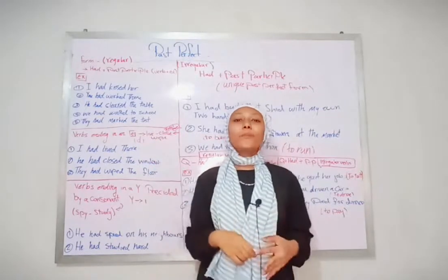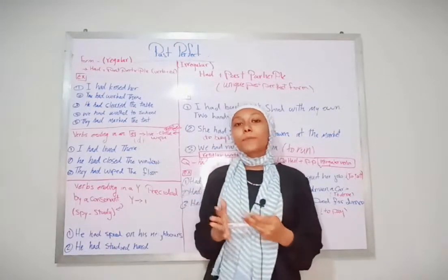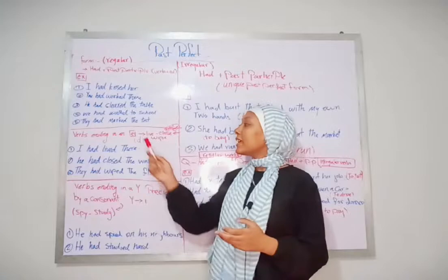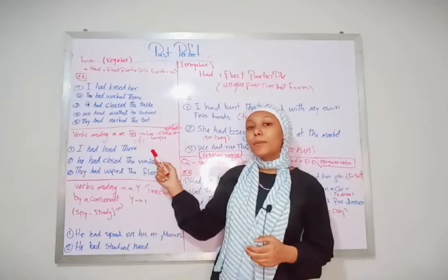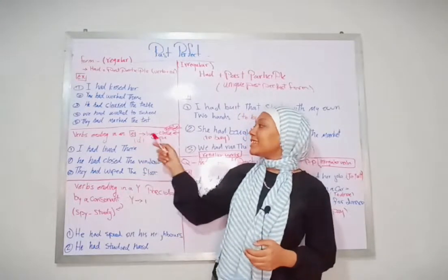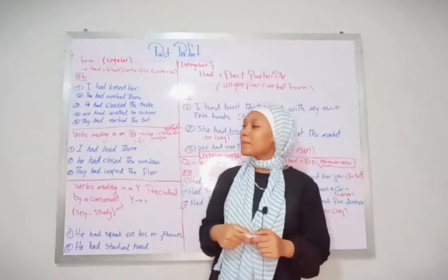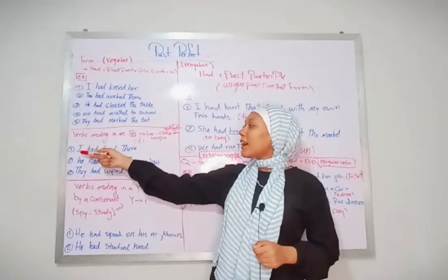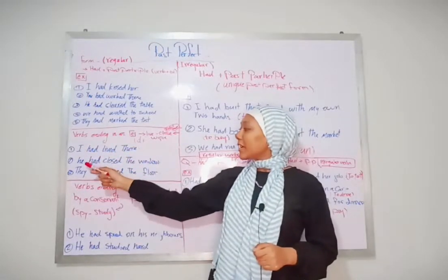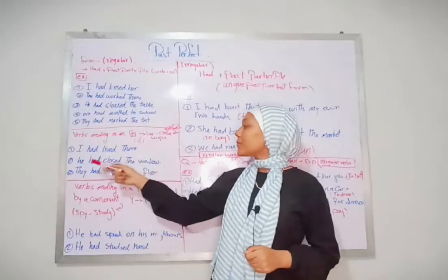Now we need to pay extra attention to verbs ending in an -e, like 'live', 'close', or 'wipe'. We add -d to the basic form of the verb. Examples: I had lived there. He had closed the window.